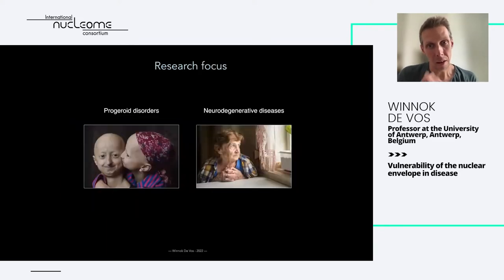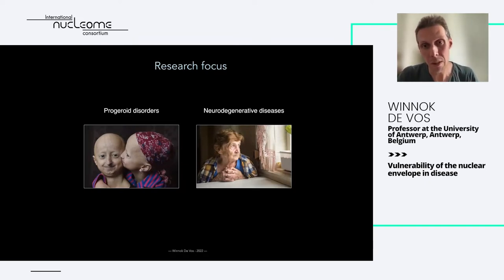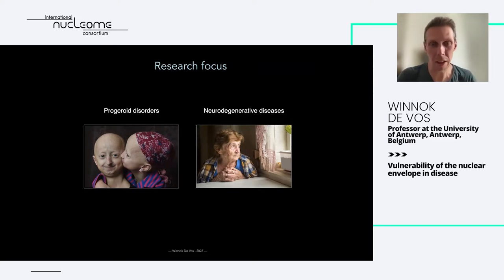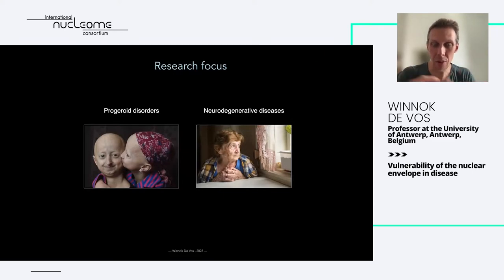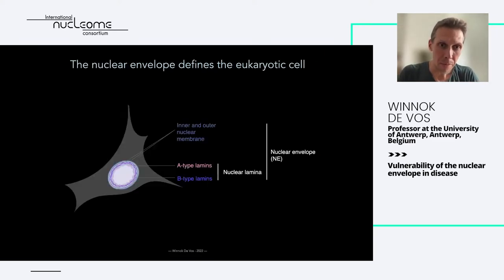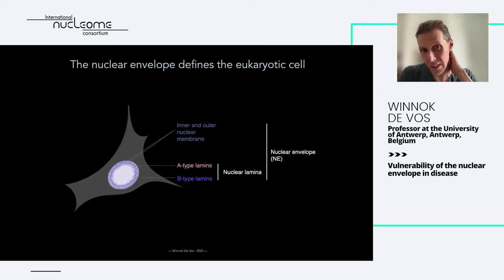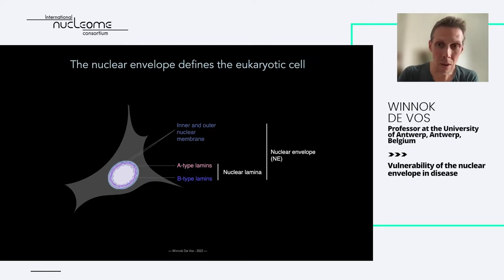Our biological and physiological interests revolve around everything related to the aging process — especially those processes that accelerate aging or accompany it in the worst scenarios, like neurodegenerative disorders. In recent years we've started looking more into what these conditions have in common. The main cell biological topic we study in this context is the key feature that defines the eukaryotic cell: the nuclear envelope.